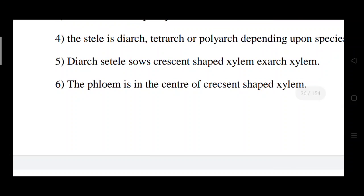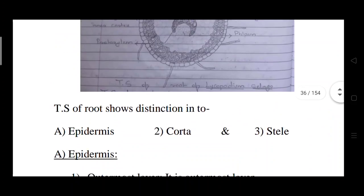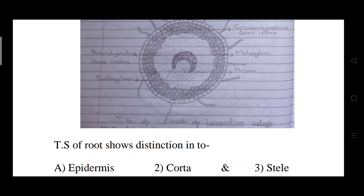The crescent shape means the middle portion is thick and tapering at both ends. The protoxylem elements are at the inner side and the metaxylem elements are at the outer side.